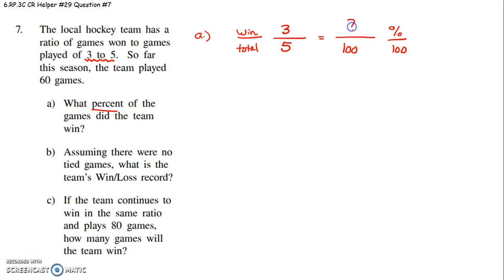We're wondering if they played 100 games, if they win three out of every five games, how many out of 100 would they win? Well, we know about our denominators. Five times 20 is 100. Three times 20 is 60 percent. This 60 percent has nothing to do with the fact that they've played 60 games. So they've won 60 percent of their games.